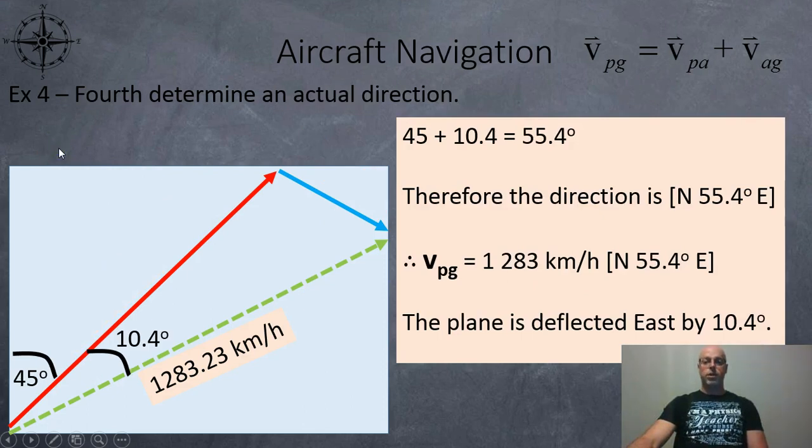Finally, we just have to find an actual direction now. So if you go up the side of the rectangle, that's north. So we're going to come over 45 degrees, another 10.4 degrees. So altogether, that's 55.4 degrees. So the direction is north 55.4 degrees east. So now we can round off our answers a little bit. The velocity of the plane compared to the ground is 1,283 kilometers per hour. So the wind is going to speed it up by 83 kilometers per hour. And instead of traveling at a 45 degree angle, it's going to go north 55.4 degrees east. So the plane is deflected east by 10.4 degrees.